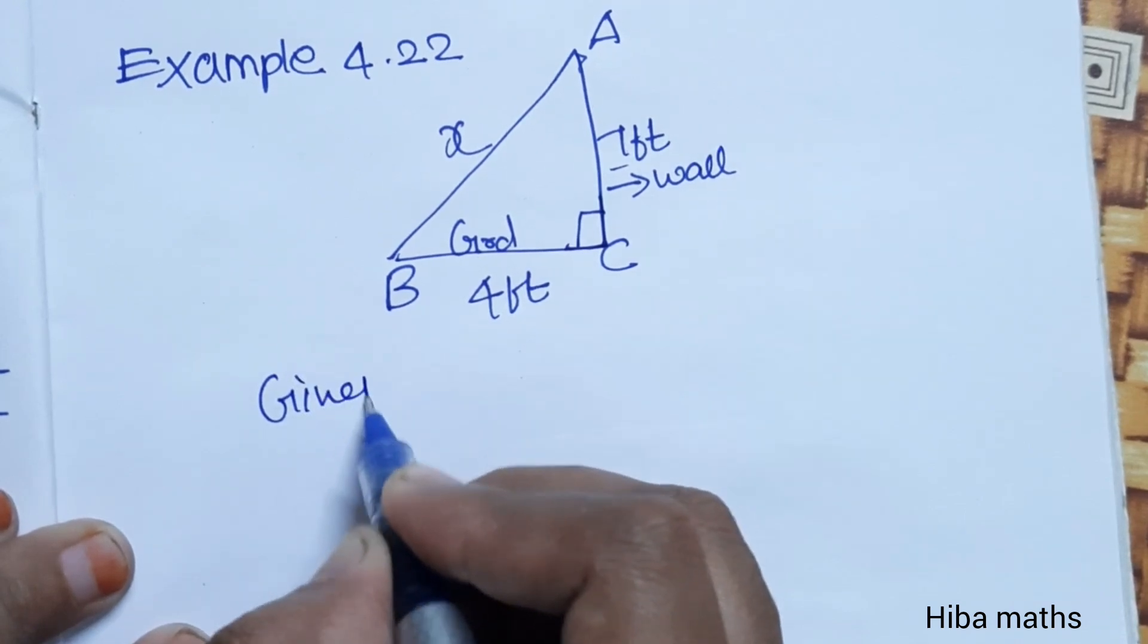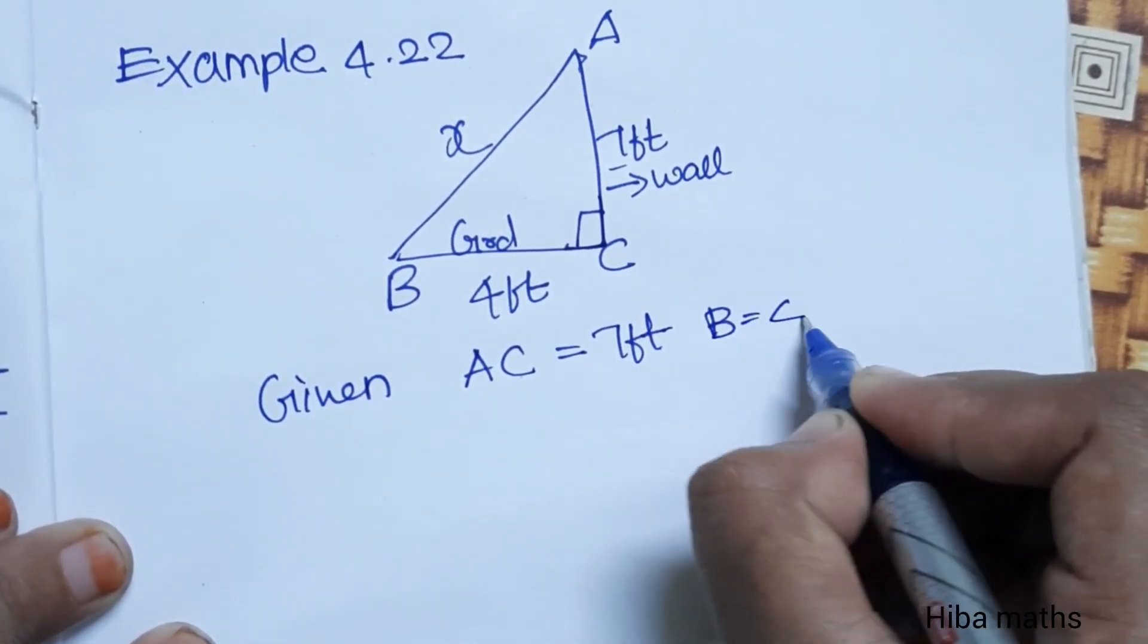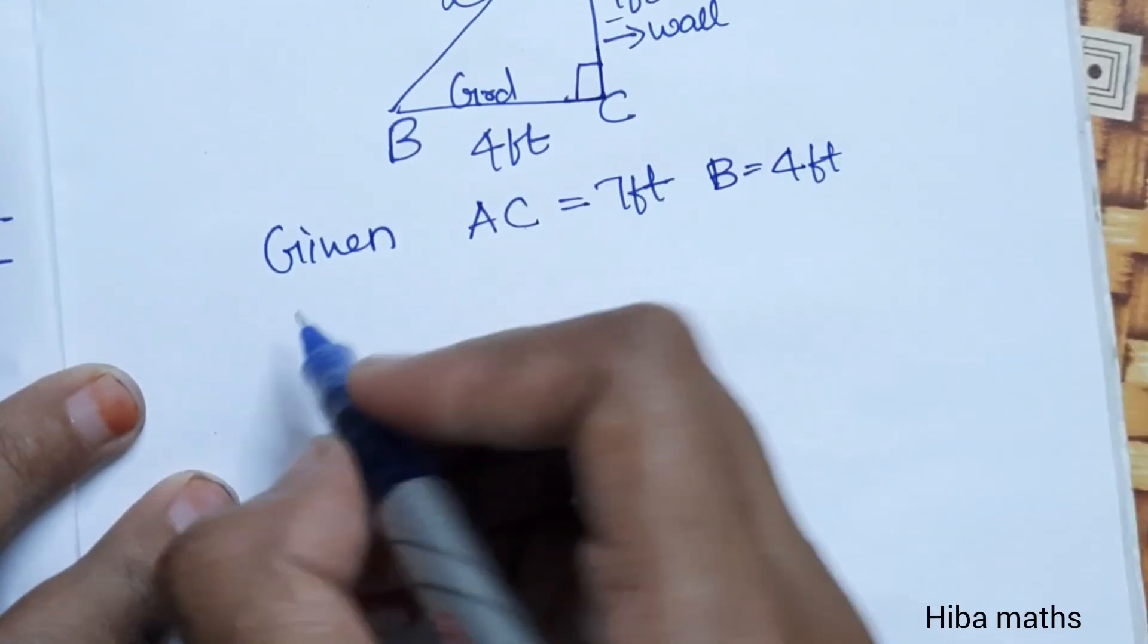First, the given values: AC equals 7 feet, BC equals 4 feet.